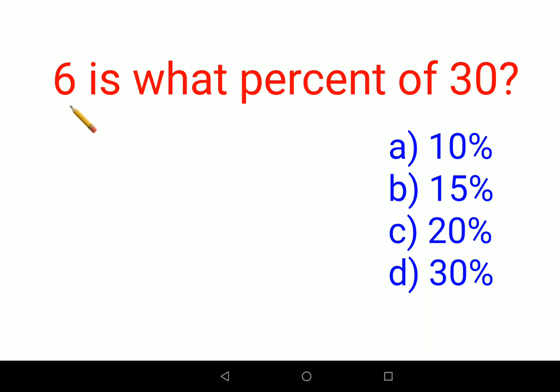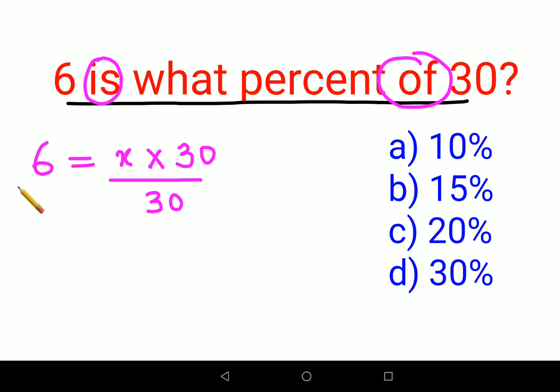So the basic one is to convert this entire word question into a mathematical expression. So now I write 6 is, in math stands for equals to, what percent. So I will have x of, of stands for multiply, 30. So now obviously, if I want to find the value of x, I'll divide both sides by 30.